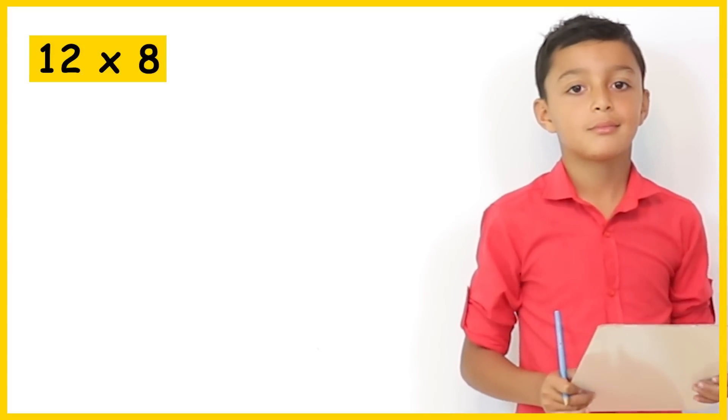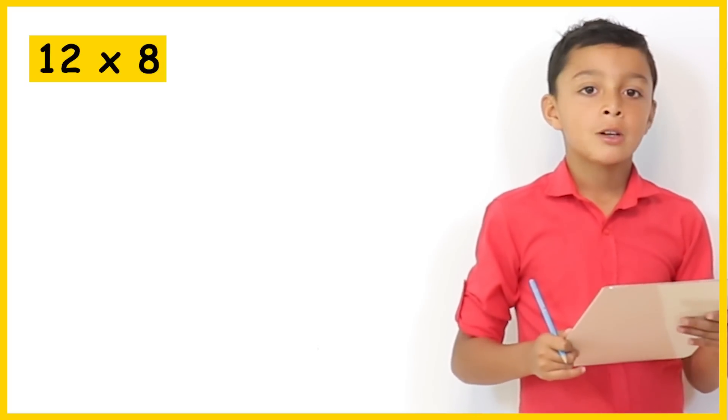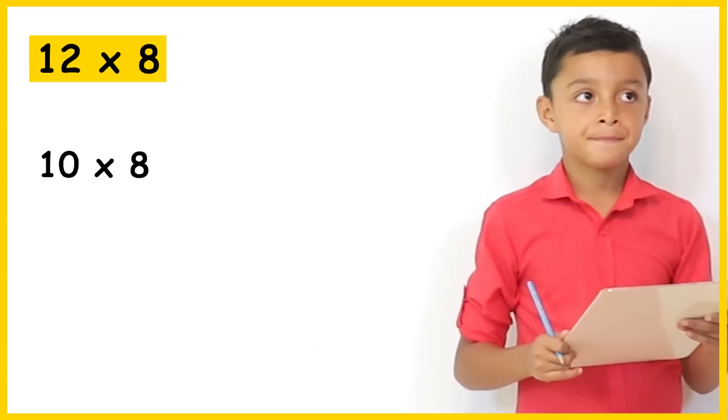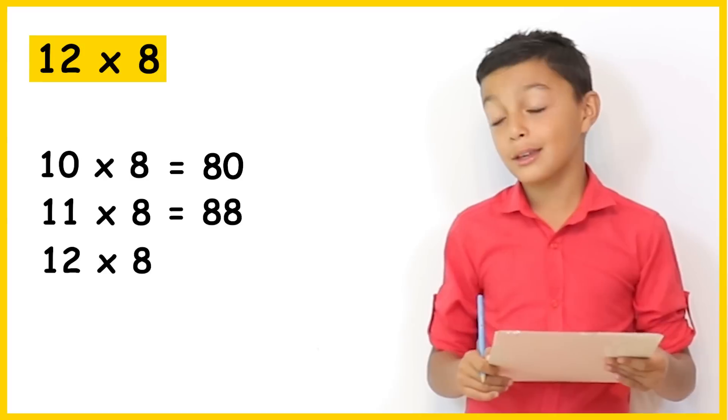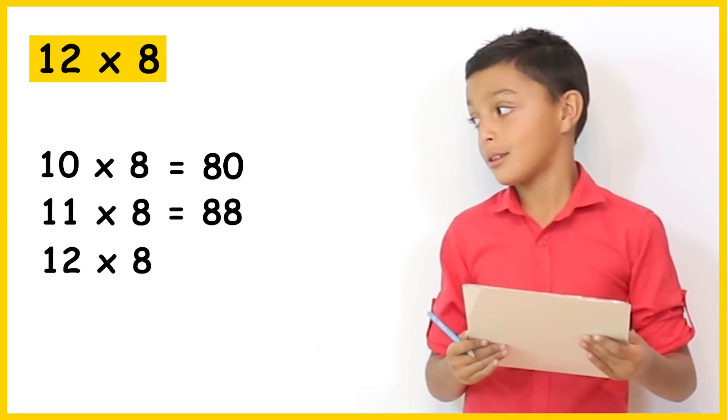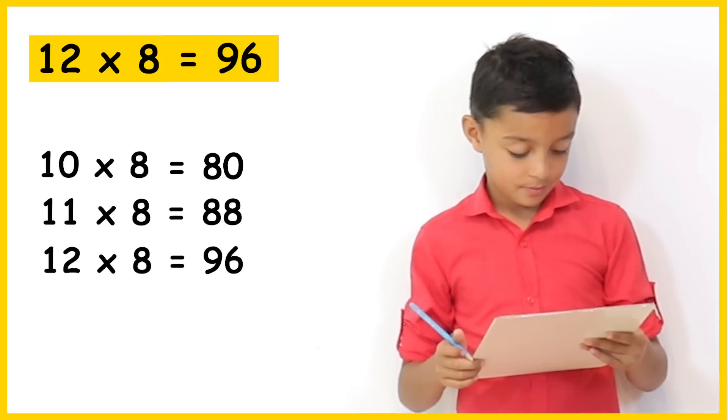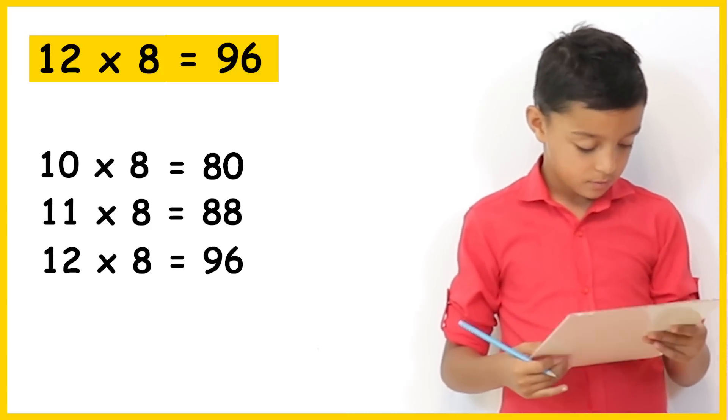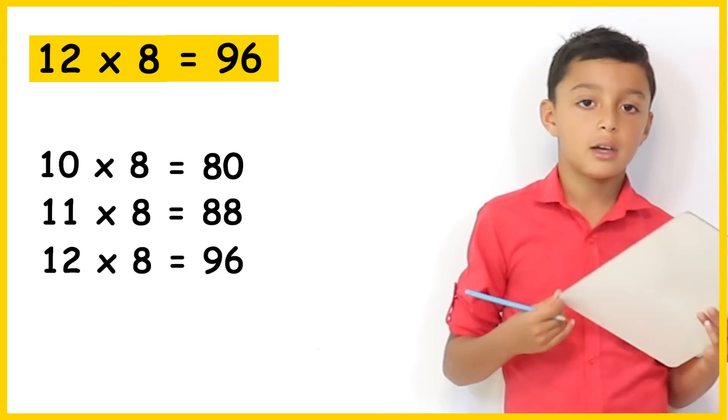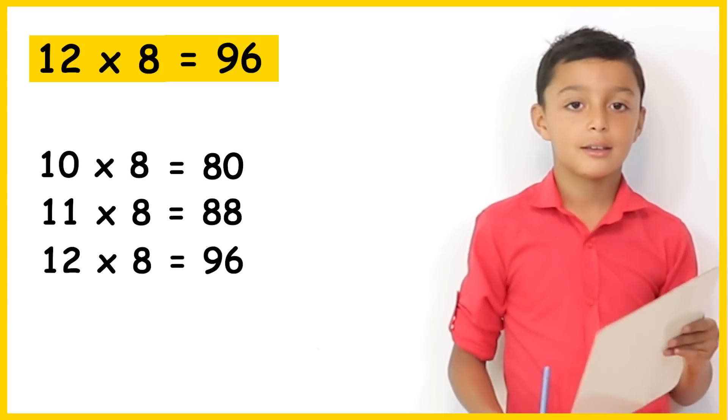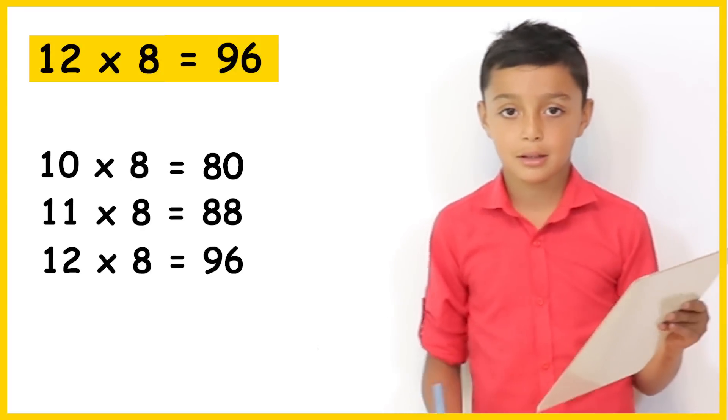12 times 8. 12 times 8. Well, we can do 10 times 8 which is 80 and then 80 plus 8 is 88 and 88 plus 8 is 96. So can we go through that again? So 10 times 8 was? 10 times 8 is 80. So then you did 11 times 8. 11 times 8 is 88. And then finally 12 times 8 is? 12 times 8 is 96. Brilliant Niall.